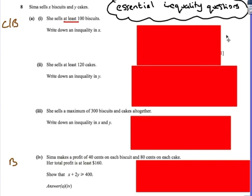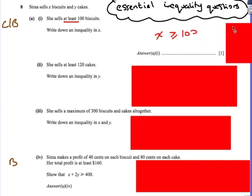Next up, look at some inequality questions. Again, these should be useful for the paper for IGCSE Cambridge exams. Here's the first one. We've got someone who sells some biscuits and cakes, X biscuits and Y cakes. She sells at least 100 biscuits. Write down an inequality in X.